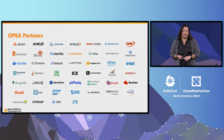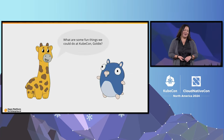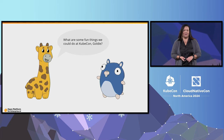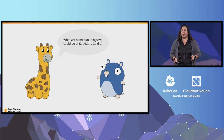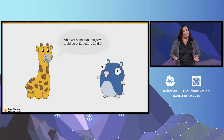We're going to walk through an example application with the help of a couple of friends. You might recognize these lovable characters, Fippy and Goldie, and they love attending CNCF events. They want to know all the fun things that are going on at KubeCon in Salt Lake City this week. They're pretty tech-savvy and they want to use AI to generate an answer.